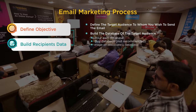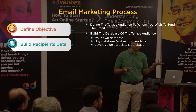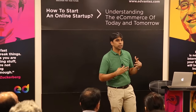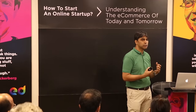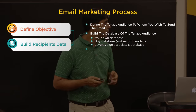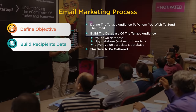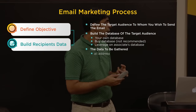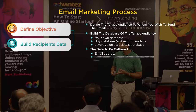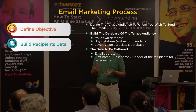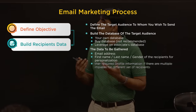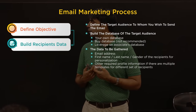Another option is to leverage an associate's database. If you have partners or vendors with databases, you can leverage those because at least you know the data is genuine. For data to gather, you want: email ID, first name, last name, and gender — plus any other profile information relevant to your business.